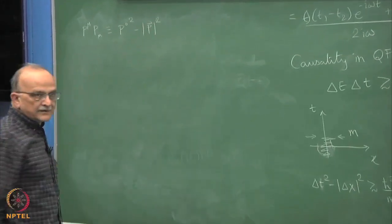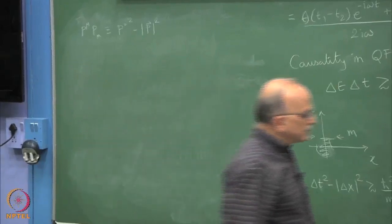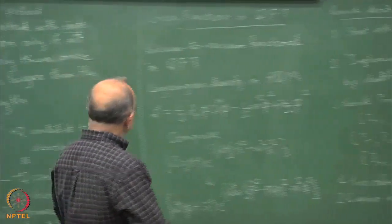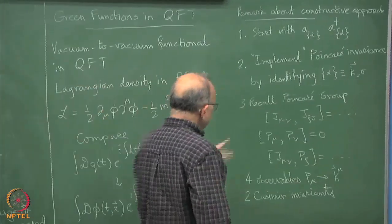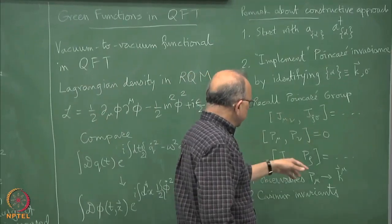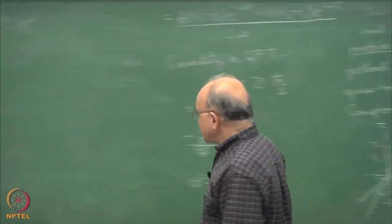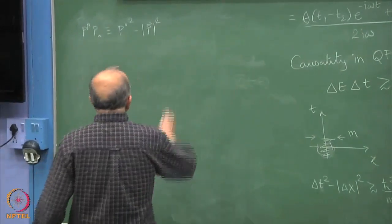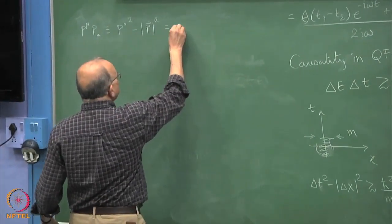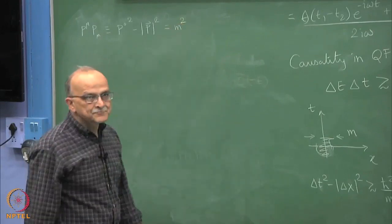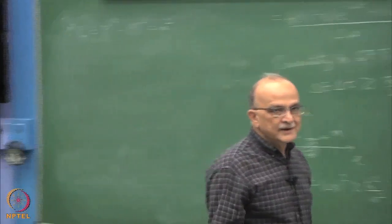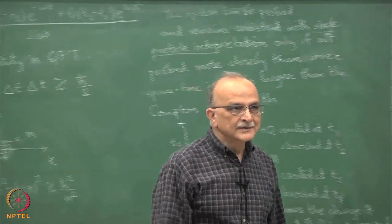One is sum of the P squares. This is 1 Casimir invariant, it will commute with everything because it is a Lorentz invariant. The J's will not touch it and the P's will also of course commute with it. This is 1 invariant which we call M square.